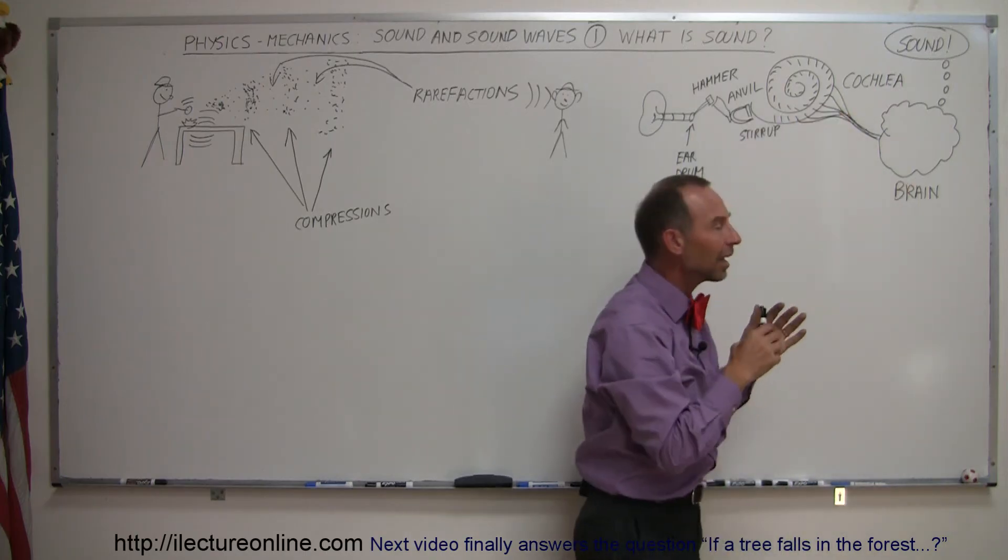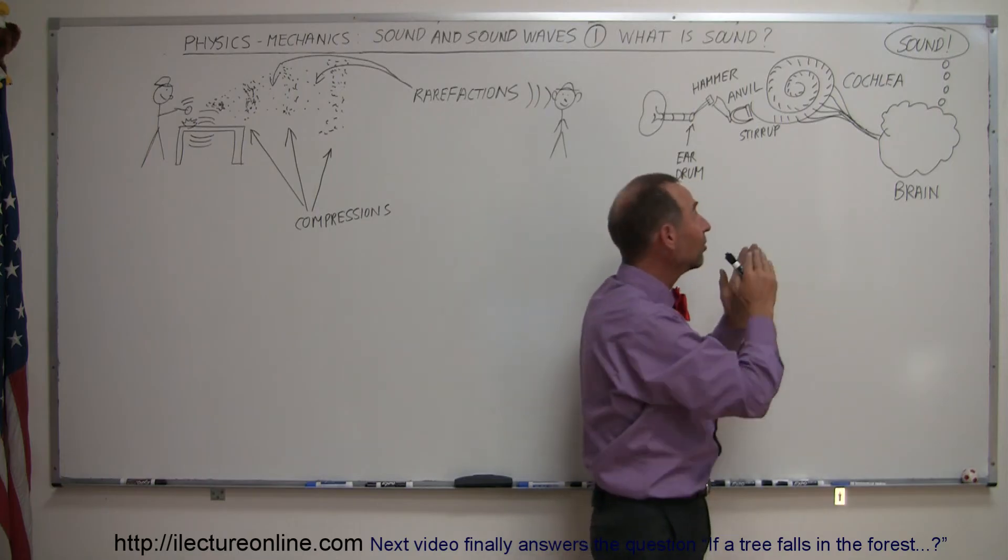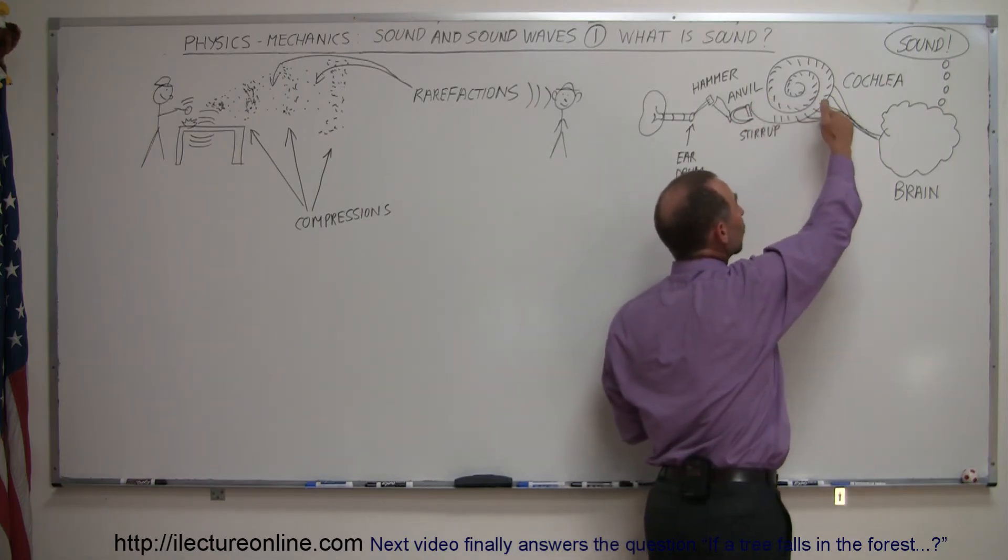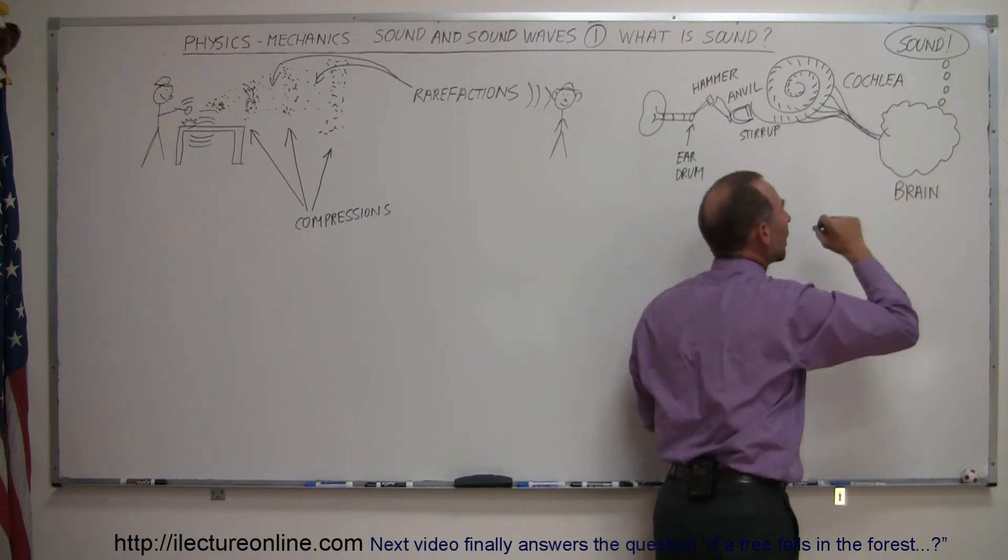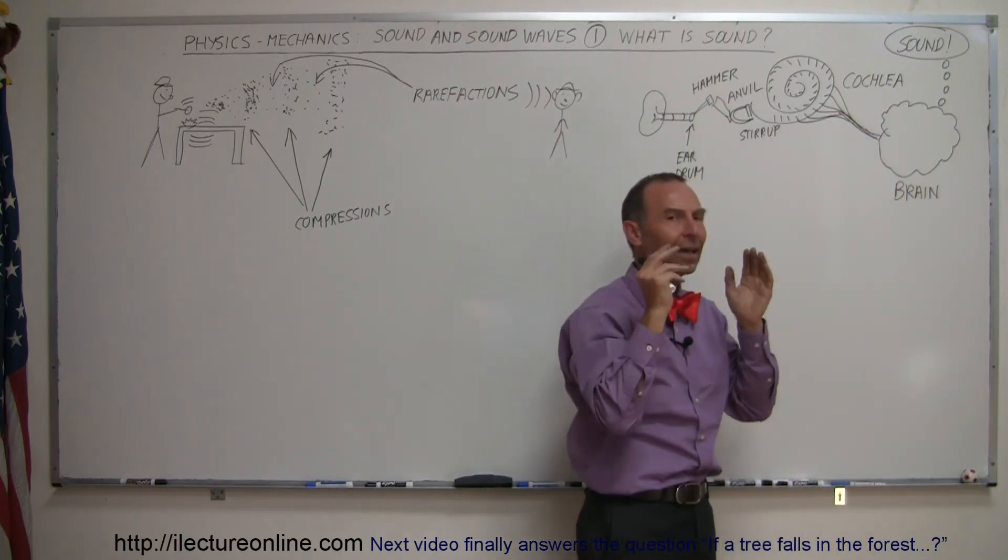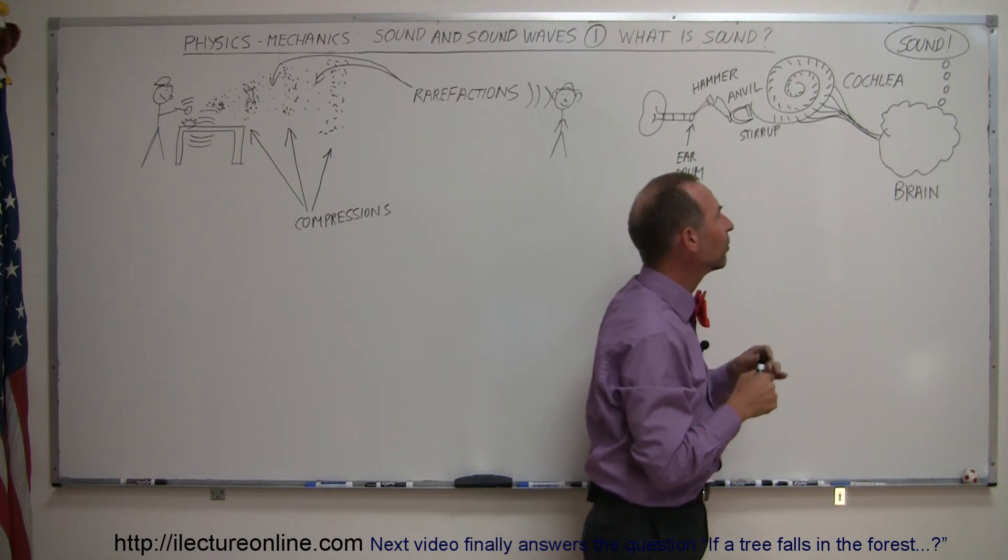So the cilia are the ones that determine what the frequency of the sound is and send that message through the nerve bundle, through the brain, saying, I have noticed some frequency at this frequency.